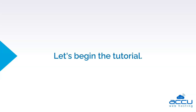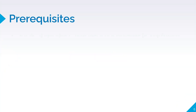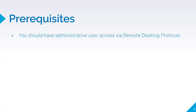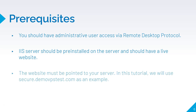Let's begin the tutorial. First of all, we will check the prerequisites. You should have administrative user access via Remote Desktop Protocol. IIS server should be pre-installed on the server and should have a live website. The website must be pointed to your server. In this tutorial, we will use secure.demovpstest.com as an example.